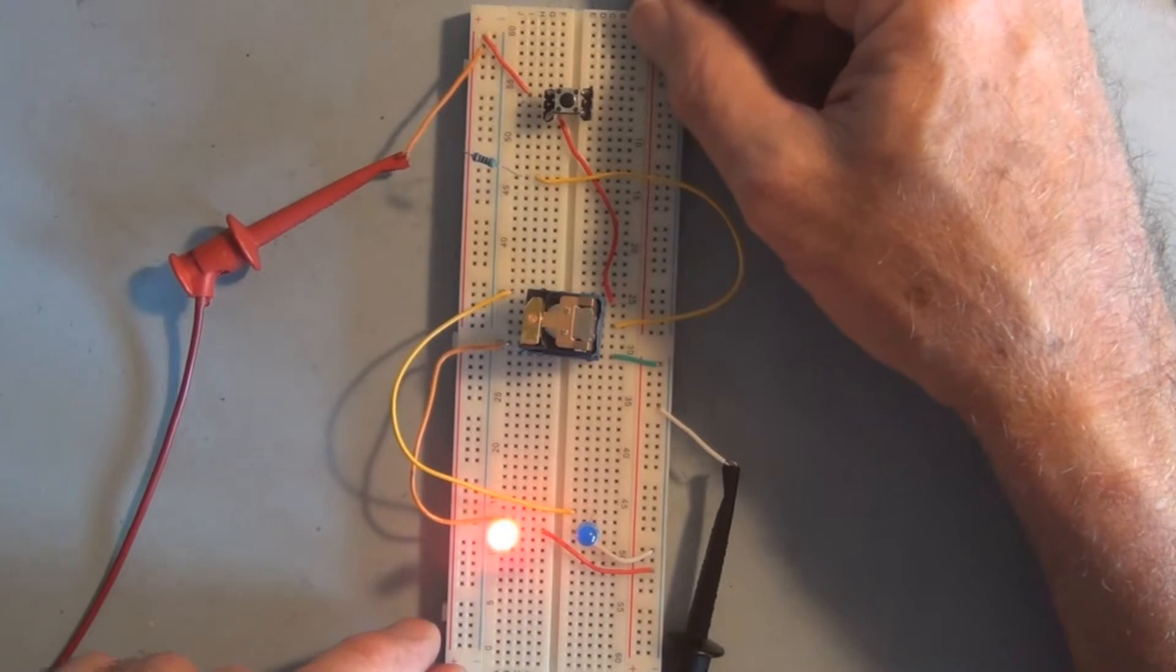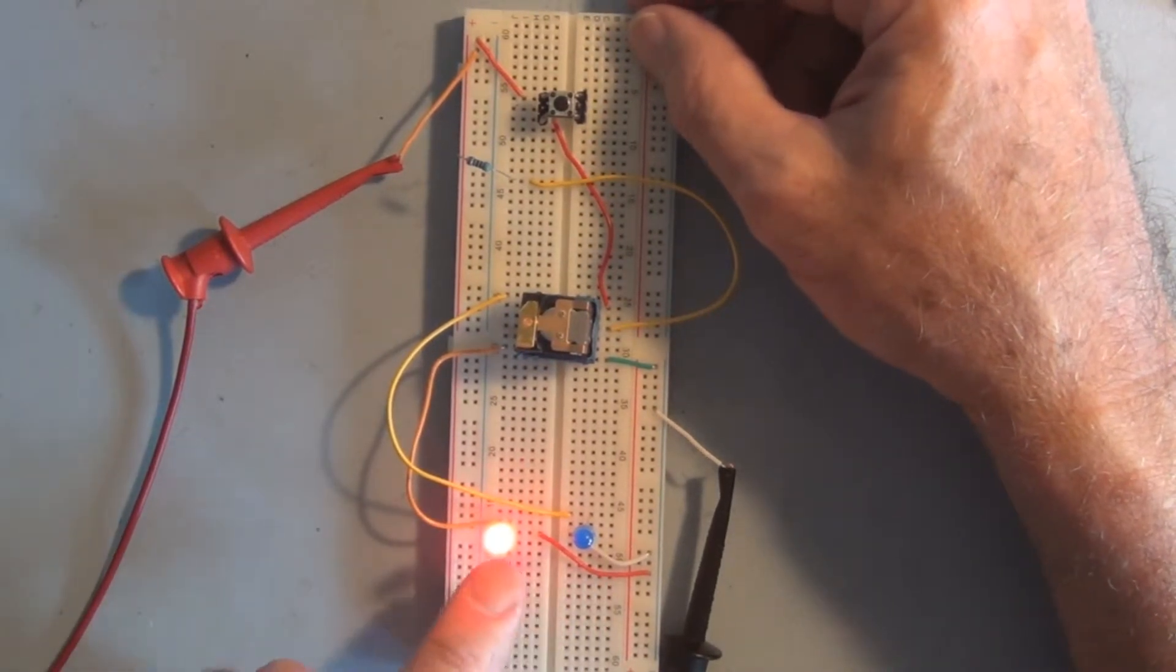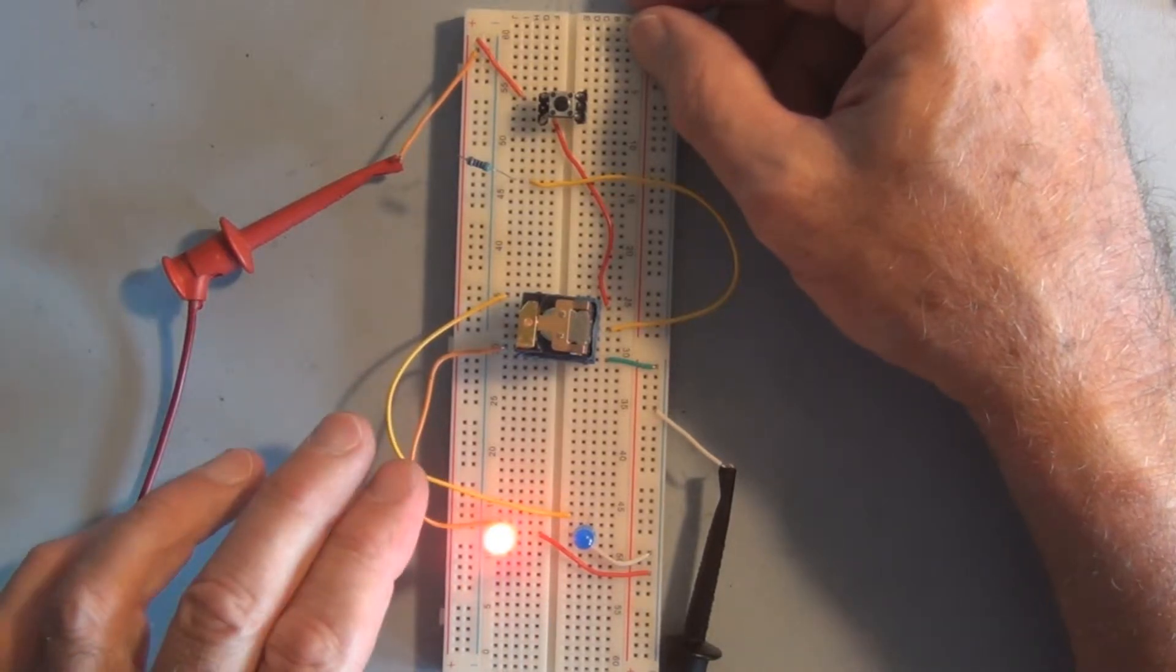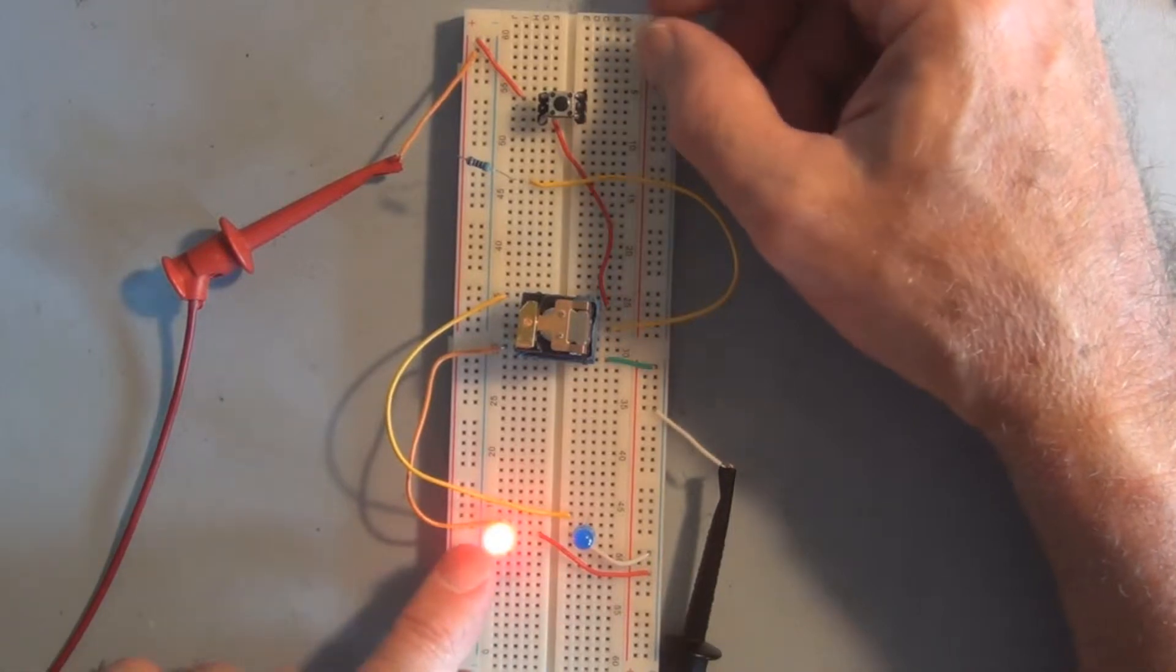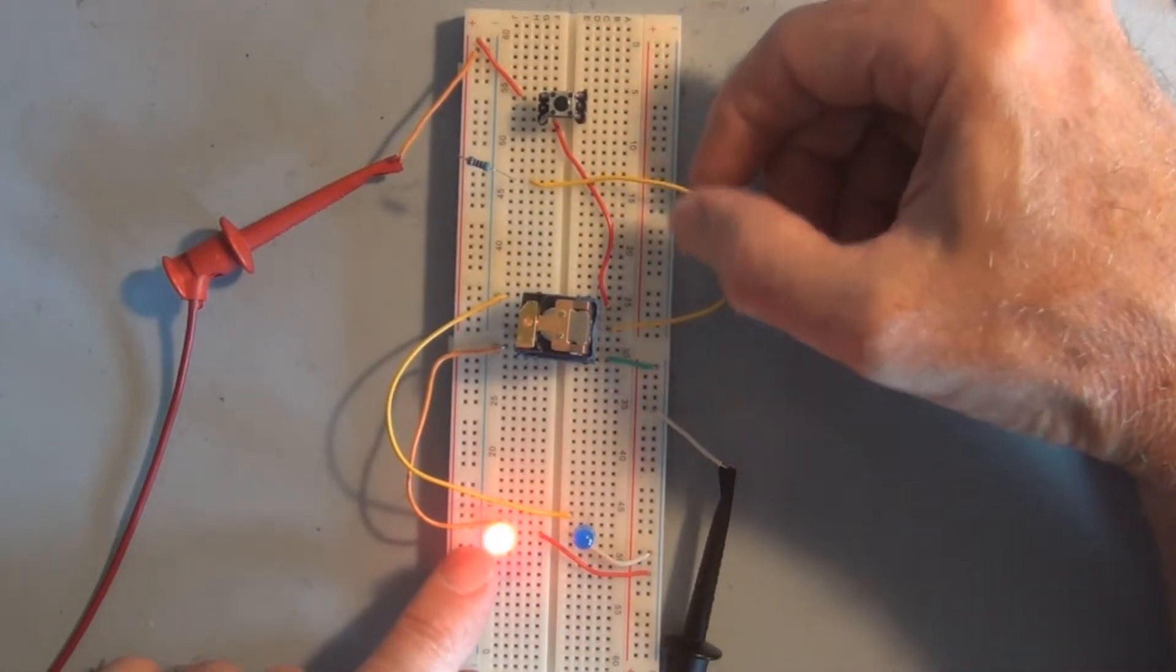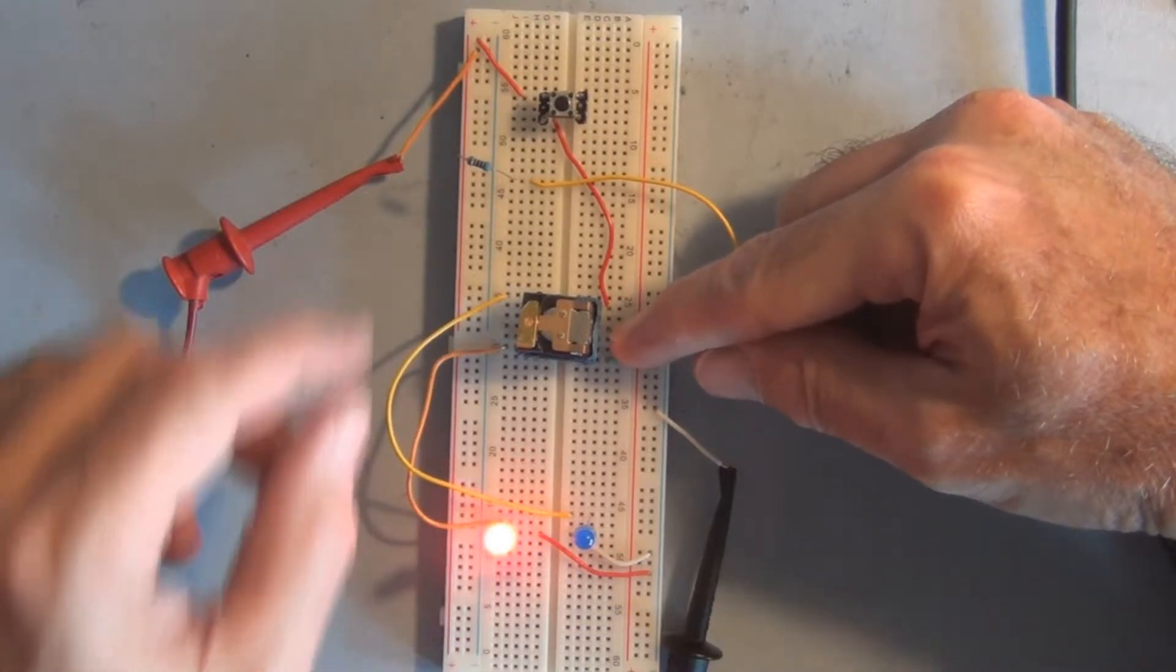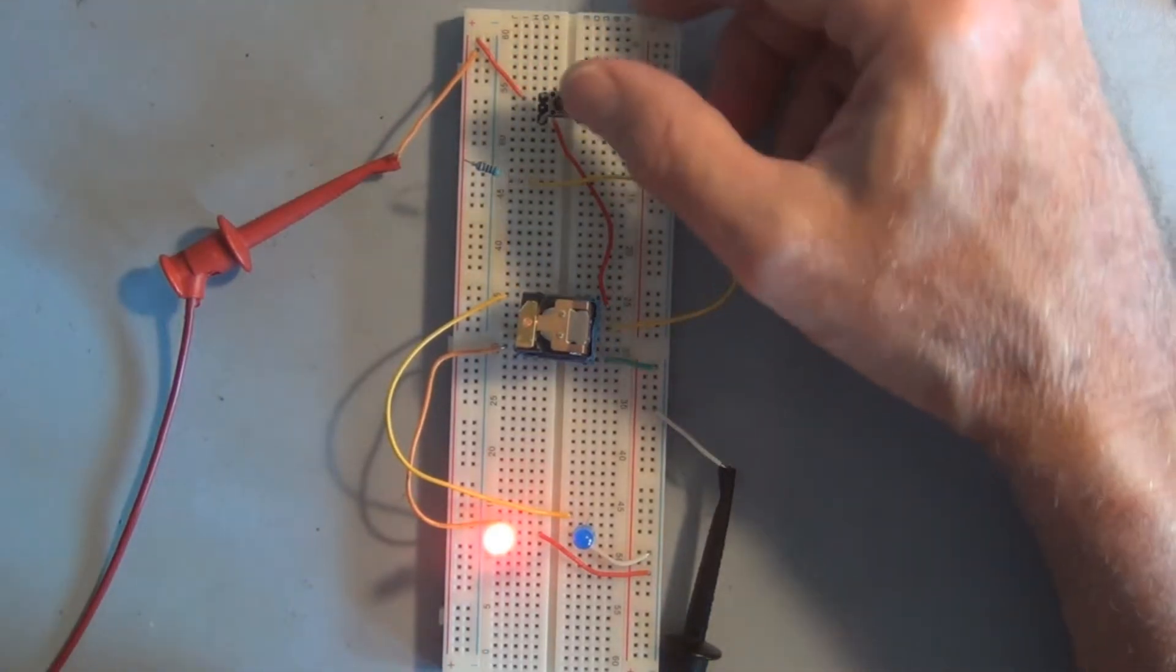All right, so I wired up a simple circuit here to exercise this relay. I've got two LEDs hooked up to the normally open and the normally closed side of the relay, so I've got five volts going to this center pin here, through a 220 ohm resistor. I've got a momentary switch.